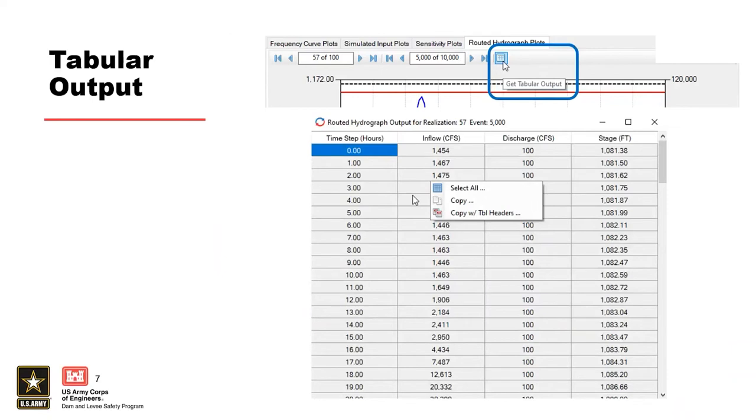Once the tabular output window opens, the user can right-click within the table to see three options: select all, copy, and copy with table headers.